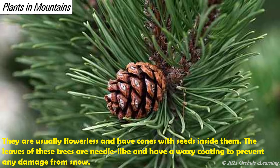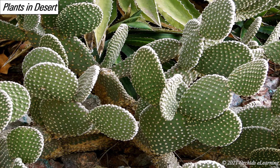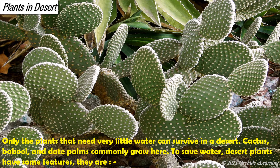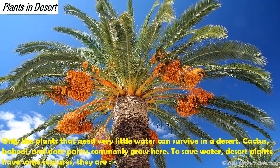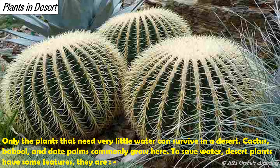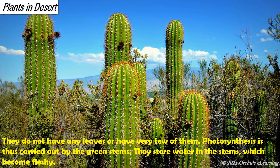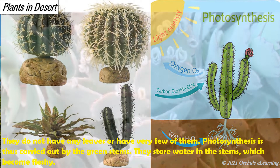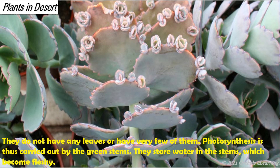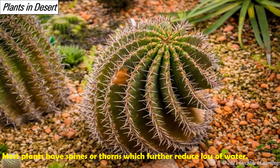Plants in desert: only plants that need very little water can survive in a desert. Cactus, babool, and date palms commonly grow here. To save water, desert plants have some features: they do not have any leaves or have very few of them, so photosynthesis is carried out by the green stems. They store water in the stems, which become fleshy. Most plants have spines or thorns, which further reduce loss of water.